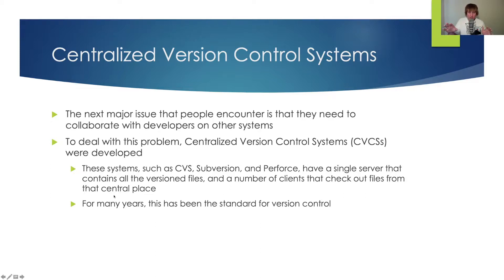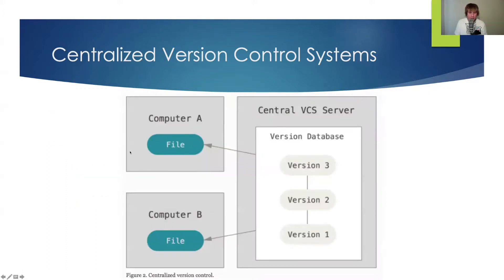I have a single server, and the local machines make requests to that server. Here I have computer A and computer B. They have a file they're keeping track of, and all the versions of that file are on the centralized server — a version database with version 1, 2, 3, just like before. This is on the server, connected over the web. I'm going to pull this file to my local machine, make changes, and then push it back to the server.